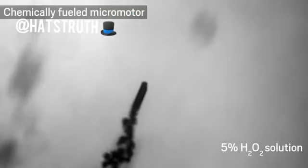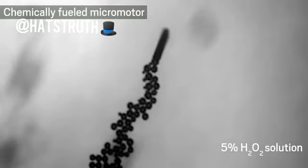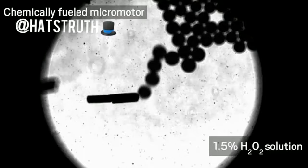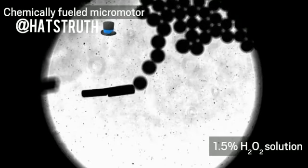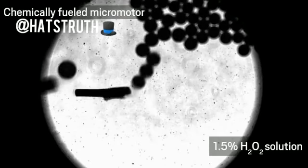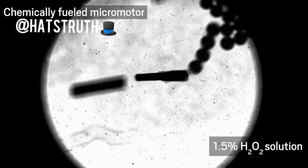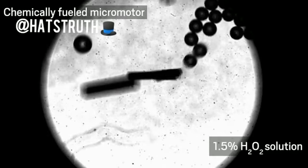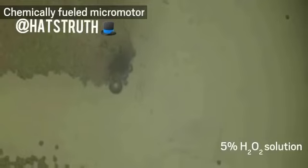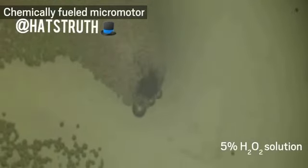Micromotors can propel themselves in a number of ways. A popular way to get around is to use a chemical fuel, such as hydrogen peroxide. Materials in the micromotors react with the fuel to produce jets of gas bubbles that push the tiny particles forward. But this approach can introduce toxic compounds into the motor surroundings.